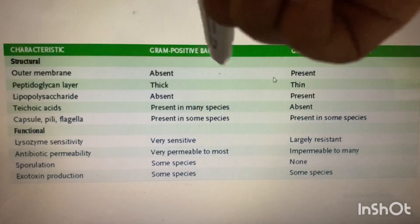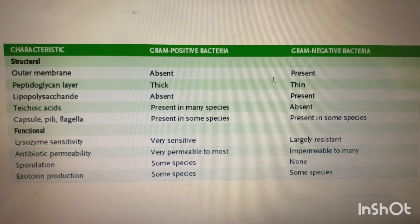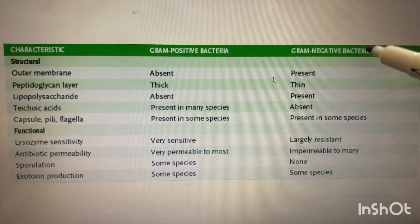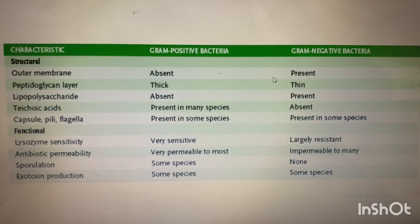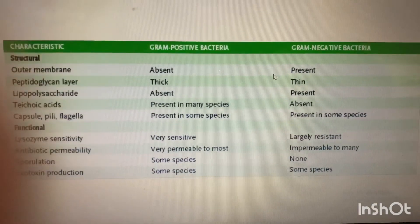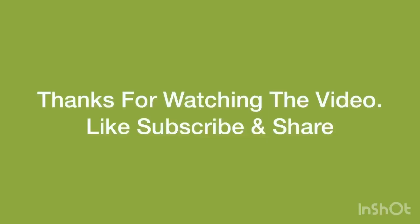Regarding toxin production: exotoxins are produced by some species of both gram-positive and gram-negative bacteria, while endotoxin is produced by gram-negative bacteria.